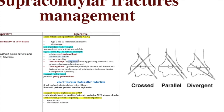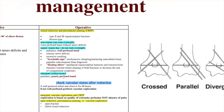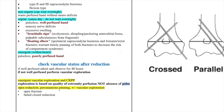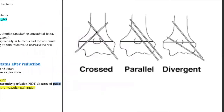Brachialis sign is basically a dimpling or puckering of the skin. Floating elbow refers to concurrent forearm or wrist fractures; these should be fixed the same day to decrease the risk of compartment syndrome. Emergent management — within a few hours — is needed if the hand is poorly perfused; always check vascular status after reduction. If the hand remains poorly perfused after reduction, vascular exploration is required. Open reduction and percutaneous pinning with or without vascular exploration is for open fractures or failed closed reduction.